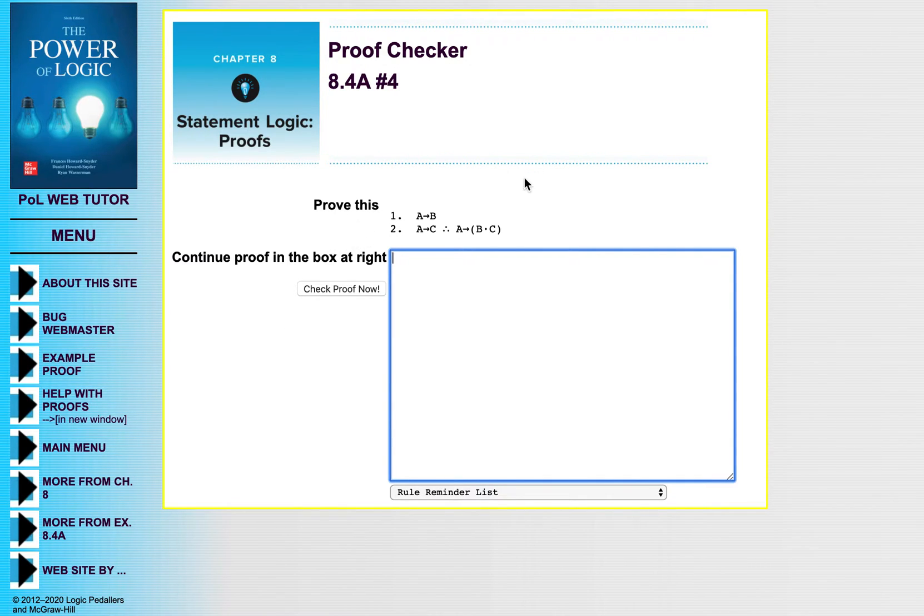Sometimes you might see the conditional in an equivalent form, like not P or Q. That's the same thing, that's equivalent to if P then Q. So look out for that too. And there are occasions when you might wanna do a conditional proof where the conditional isn't the conclusion. But right now I wanna get into the basics and just illustrate how you do it on WebTutor and the general ideas.